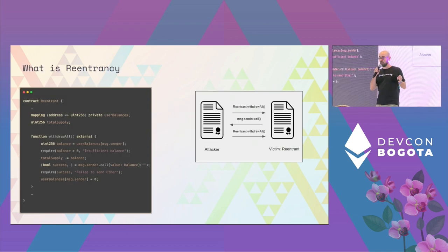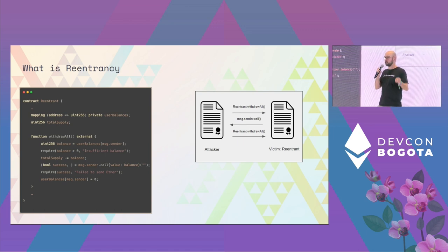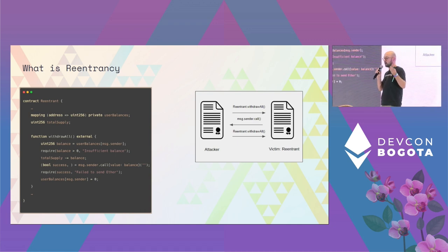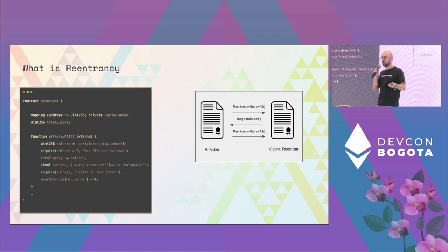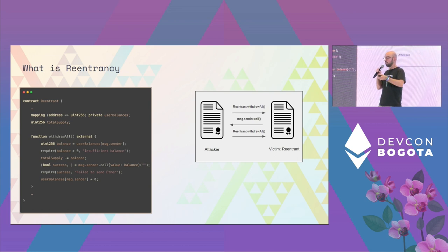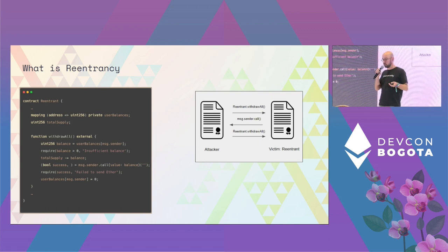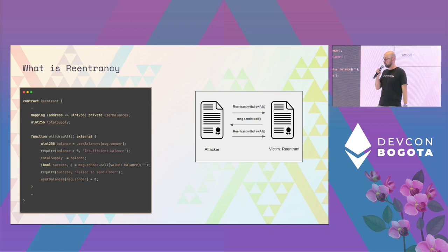To give you the textbook example of a re-entrancy: we have a re-entrant contract where users can deposit and withdraw Ether from it. When a user tries to withdraw, when the native Ether is sent to the receiver, the receiver has the opportunity to run arbitrary code. What a malicious receiver can do is call the withdraw-all function again. Since the state has not been fully updated and the user's balance is not set to zero, they can successfully call withdraw-all again and essentially get more Ether than what they had deposited.